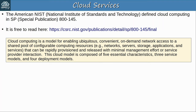Here's the last of the five essential characteristics: measured service. Cloud systems automatically control and optimize resource use by leveraging a metering capability at some level of abstraction appropriate to the type of service — for example storage, processing bandwidth, and active user accounts. Resource usage can be monitored, controlled, and reported, providing transparency for both the provider and customer. A customer should never be surprised by a big bill at the end of the month, because their usage is clearly visible within the web portal. Customers are charged based on usage, for example X dollars per gigabyte of storage per day.